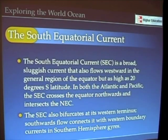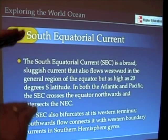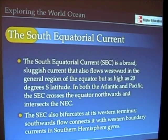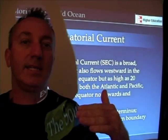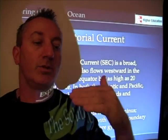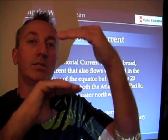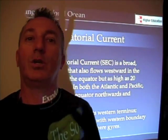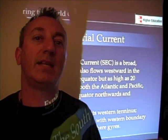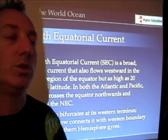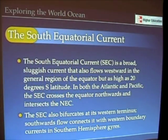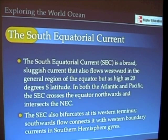There are important physical reasons why this whole system is displaced northward. As I described earlier, the ITCZ — the Intertropical Convergence Zone — is displaced slightly northward, and it has largely to do with the fact that the south Pacific Ocean is such a large basin. The south equatorial current also bifurcates at the western boundaries.